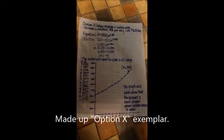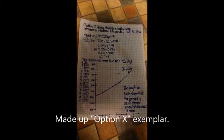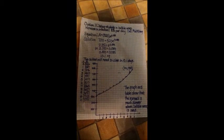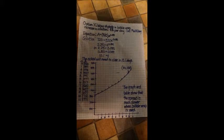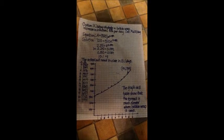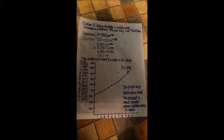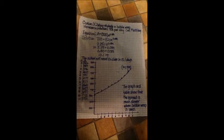My option X exemplar shows the option of wrapping students in bubble wrap. Although this is not given as an option in your project, it is meant to show you what your completed solution could look like.